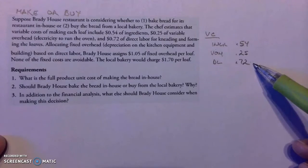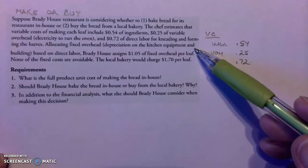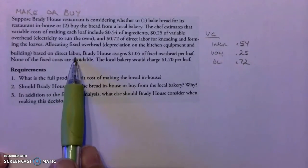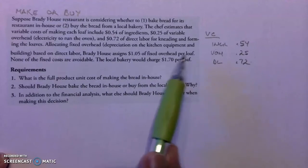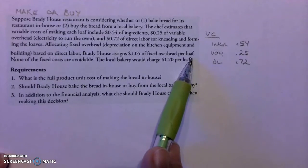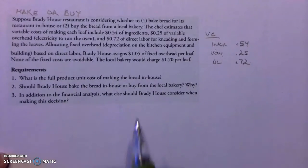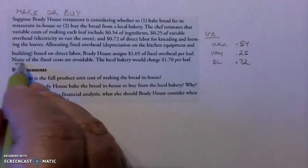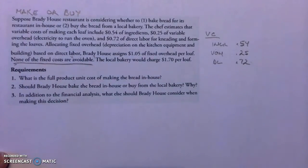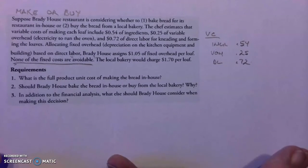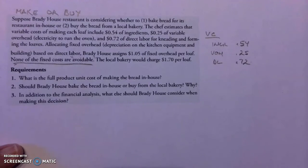Allocating fixed overhead — depreciation on kitchen equipment and the building — is based on direct labor, and they assign $1.05 of fixed overhead per loaf. However, none of the fixed costs are avoidable. Avoidable means we can get rid of them. Since these costs are there whether or not you make the bread, they are irrelevant to the decision.